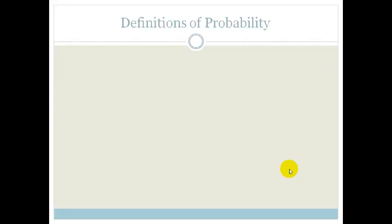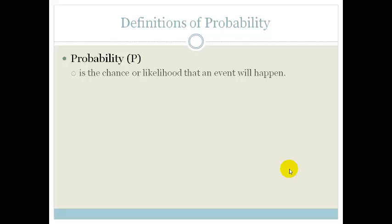So let's talk about some definitions. First of all, what is Probability? Probability is the chance or likelihood that an event will happen. What is the chance that it'll rain tomorrow? What is the chance that the train will come on time? So that is Probability.